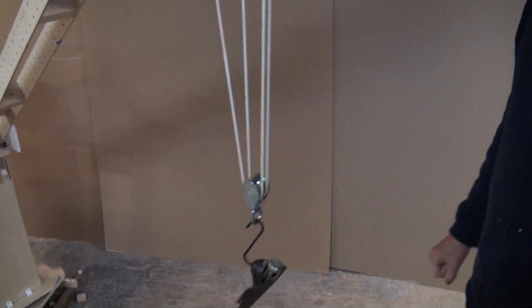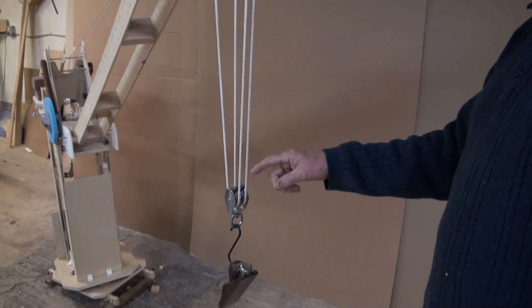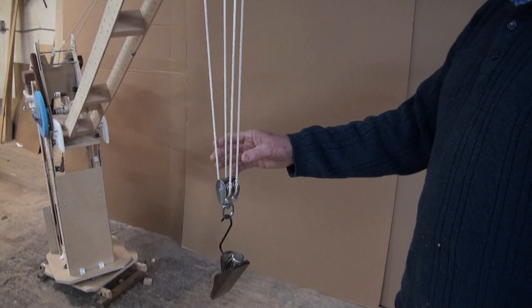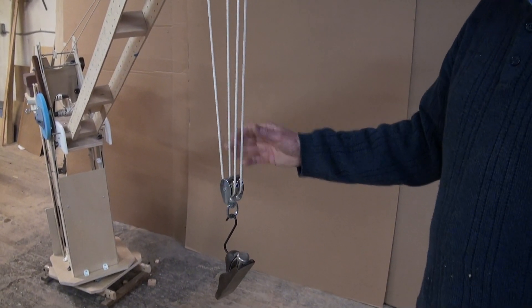What's the advantage of having four parts of line? On a big heavy crane you'll see pulleys with four parts of line, maybe 20 parts of line.